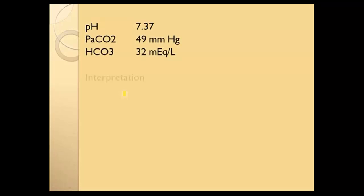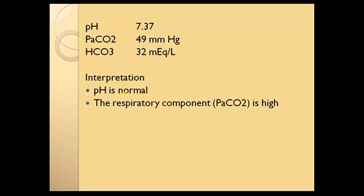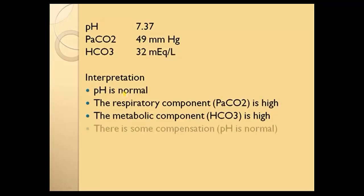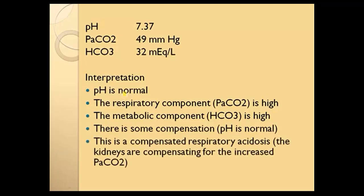Let's mix it up. The pH is normal. The respiratory component, the PaCO2, is high. But the metabolic component, the bicarb, is also high. There is some compensation — the pH is normal. So what do we have? It's a compensated respiratory acidosis. Which came first? You don't know without more clinical signs, symptoms, history — a clinical picture — and previous arterial blood gases to compare. In this case, the CO2 went up first, and then the bicarb went up to compensate, bringing the pH back to normal. In a testing situation, you would be given more clinical information.